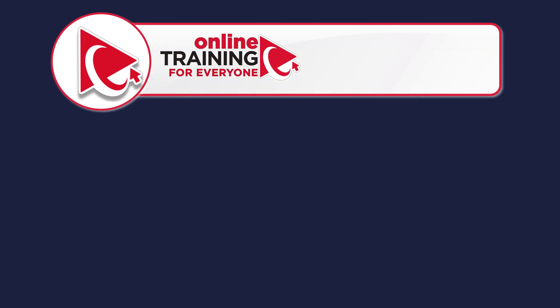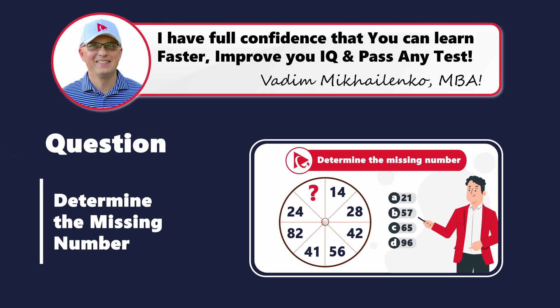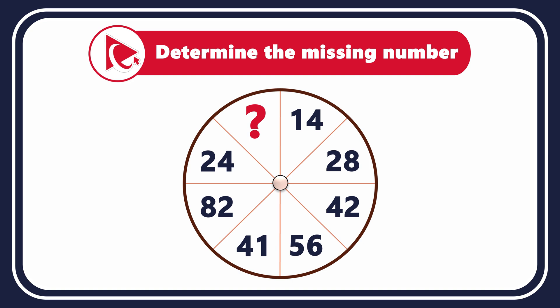Prepare to tackle this tricky question designed not just to test your mental math abilities, but also to improve your critical thinking skills. You're presented with a circle which is broken down into 8 equal parts. Each part has a number and the numbers are 14, 28, 42, 56, 41, 82, 24 and then comes the missing number. You need to determine the missing number and select it out of 4 possible choices.